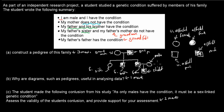For constructing the pedigree correctly you will get all three marks — three out of three. The marks are awarded for correctly showing affected and unaffected individuals, the inheritance lines, and the marriage lines. That was the first part. The second part asks: why are diagrams such as pedigrees useful in analyzing data?